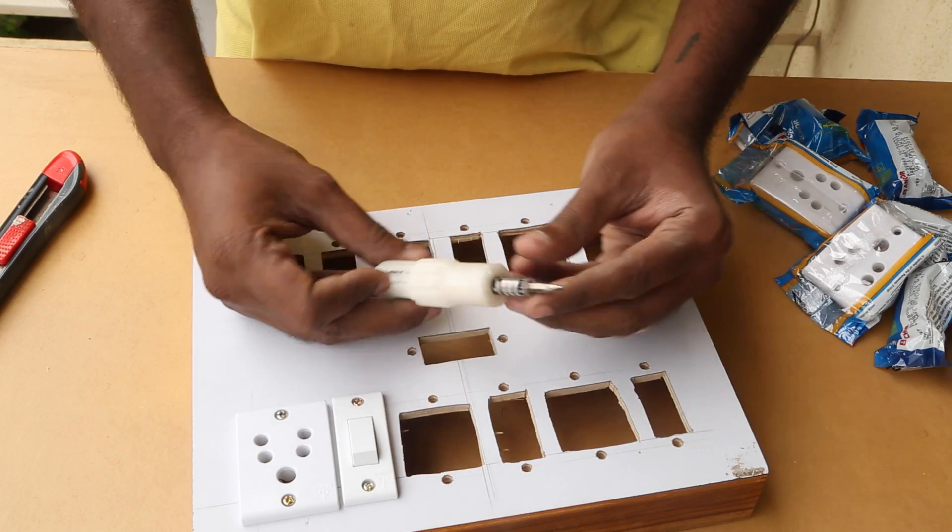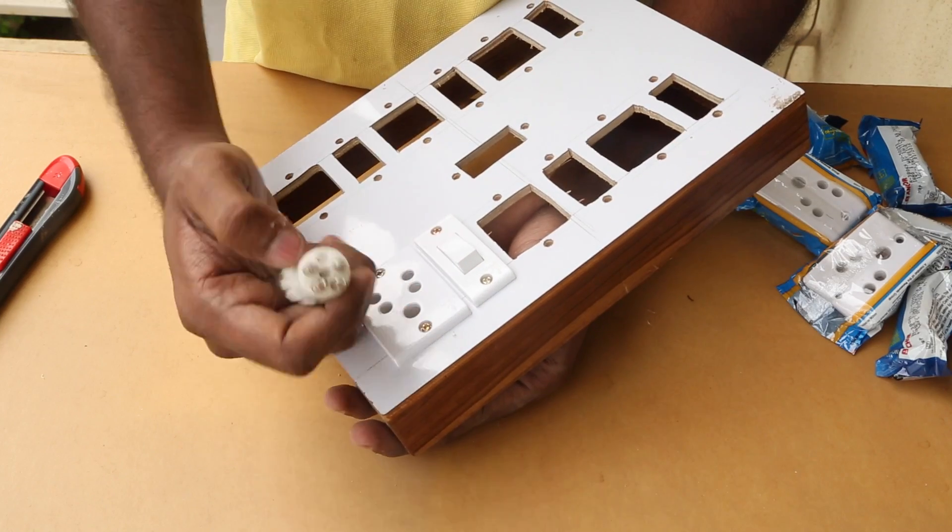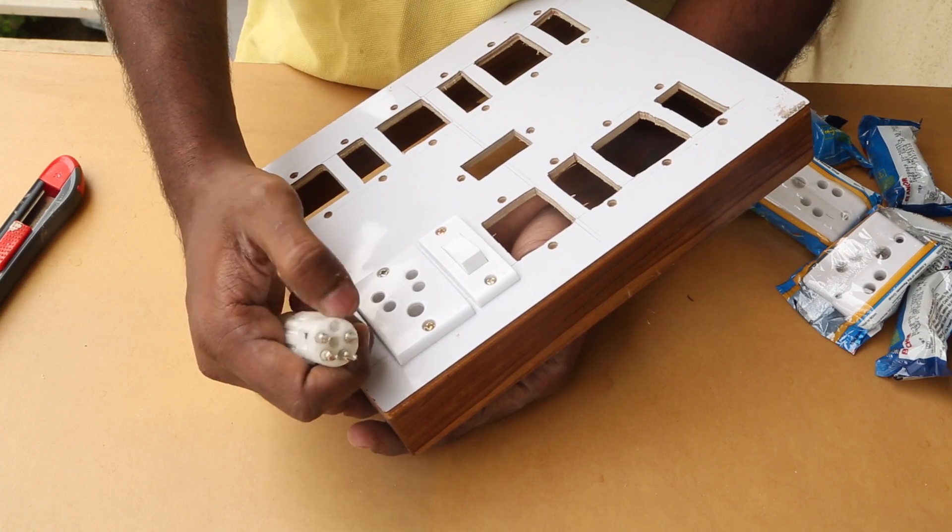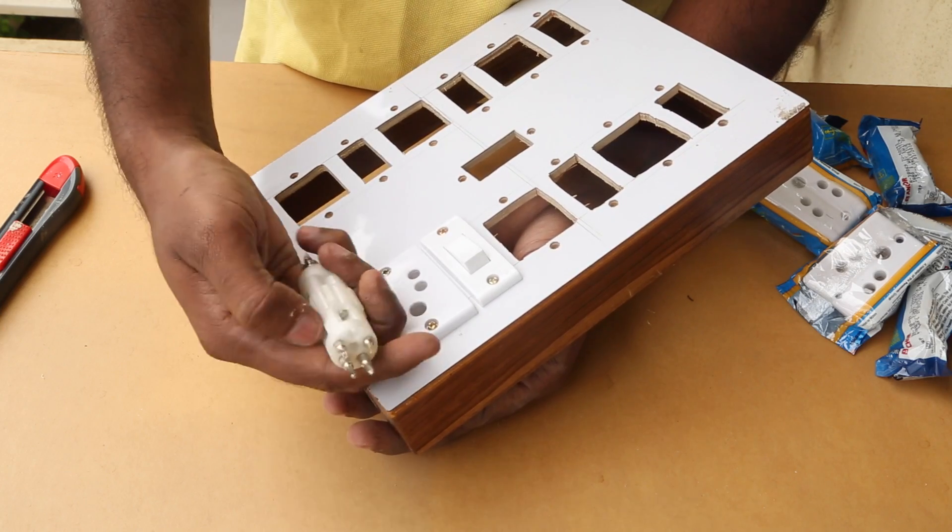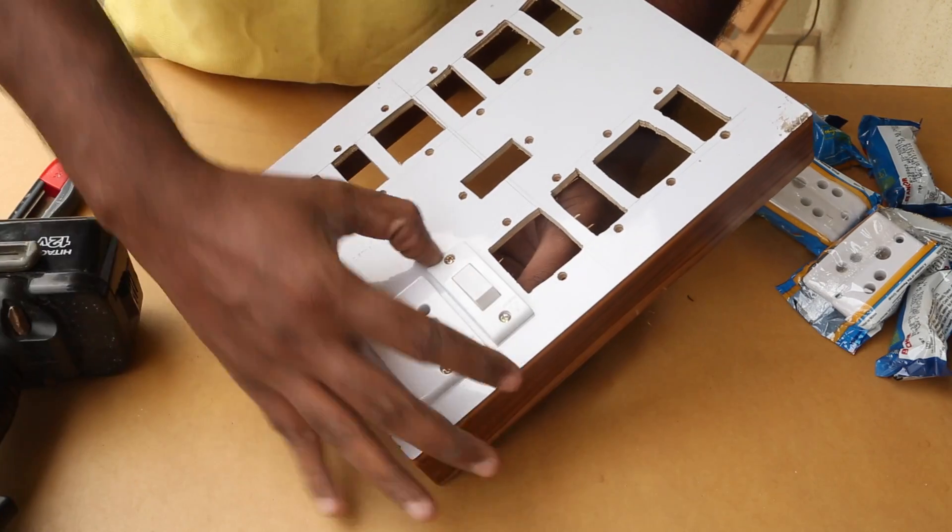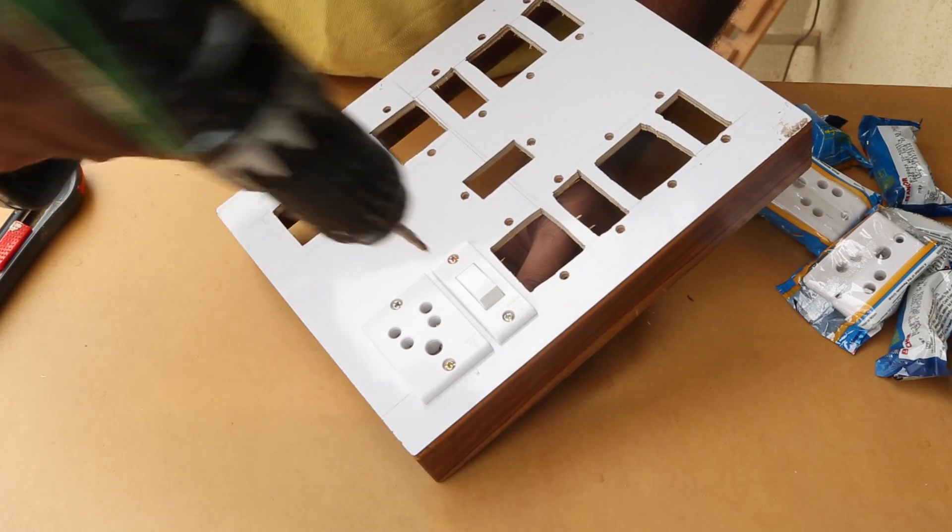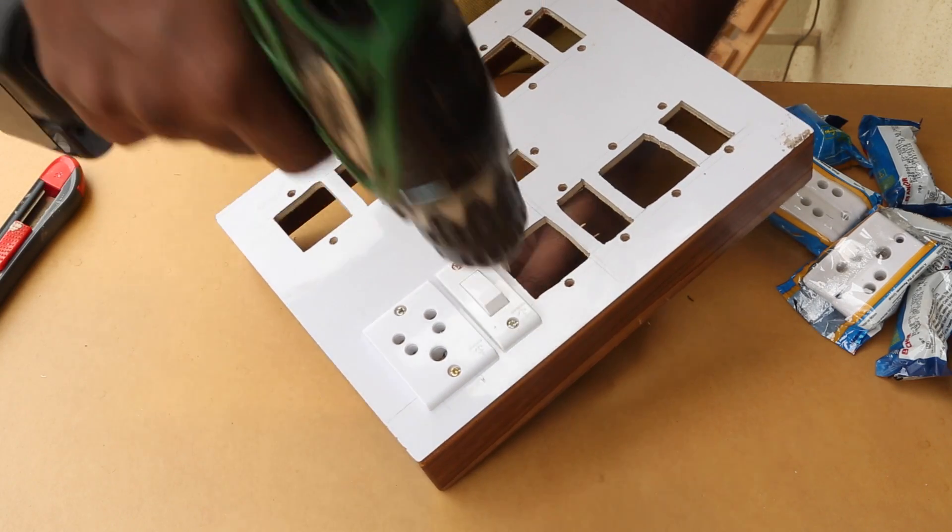Here's my homemade 3d printed screwdriver which I'm going to use. This has sockets at the back which I designed so that I can put the other bits which I usually normally use. Now put the gap properly, hold it in place and just tighten it up.